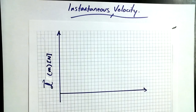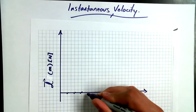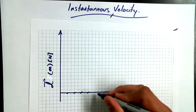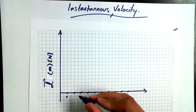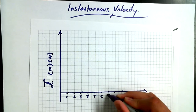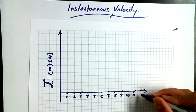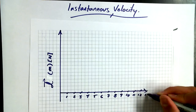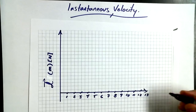All right, so we've got a position-time graph. I'm going to make north be positive, with time on the horizontal axis. I'm going to space it out every 2 on my graph paper, going all the way up to the 13-second mark. Time in seconds.